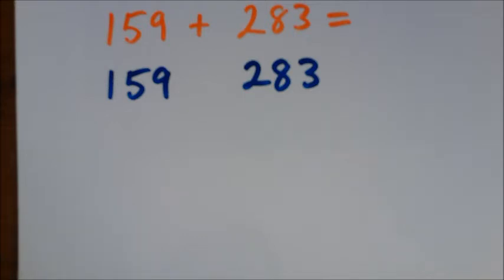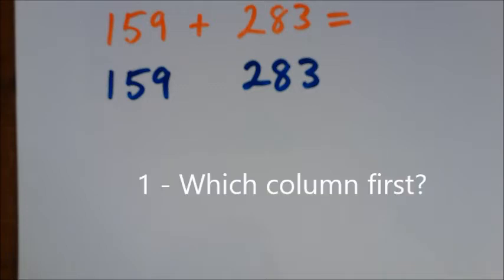So what's step one? What's the first question you ask yourself? It's which column are we looking at to do round and adjust? The first thing we've got to do is to round one of those two numbers. We either round 159 or we round 283. Which column would we be looking at to do that? The hundreds, the tens, or the ones?